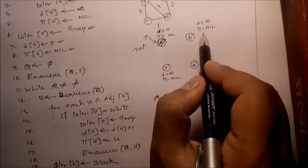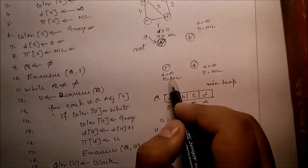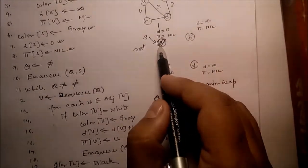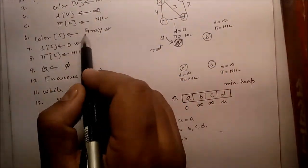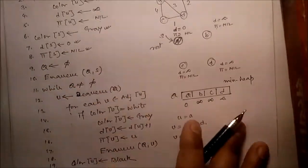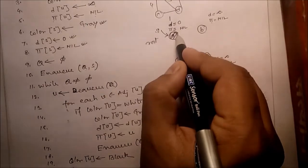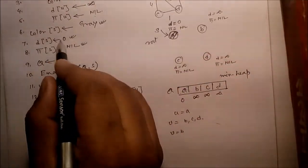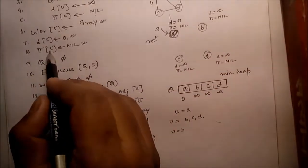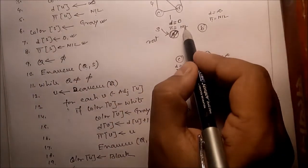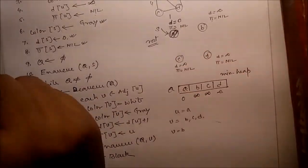Pi indicates who is the parent. Pi of B means we store information about who is the parent of B. Pi of S equals nil means A will be the root node. Pre-processing: color of S is equal to gray, D of S is equal to zero — distance from itself is zero — and pi of S is equal to nil.